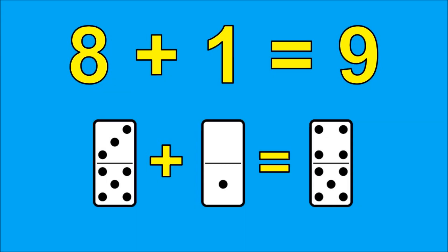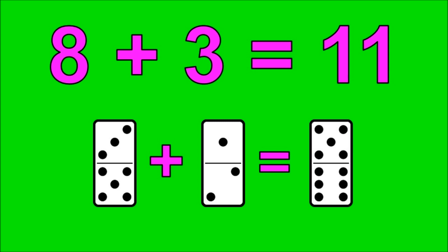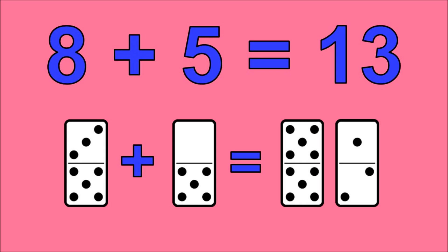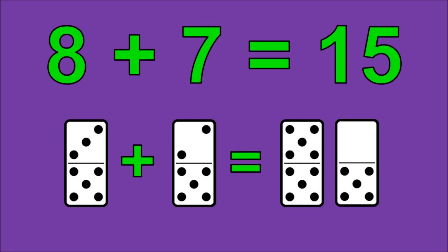Let's go! 8 plus 0 is 8. 8 plus 1 is 9. 8 plus 2 is 10. 8 plus 3 is 11. 8 plus 4 is 12. 8 plus 5 is 13. 8 plus 6 is 14. 8 plus 7 is 15.